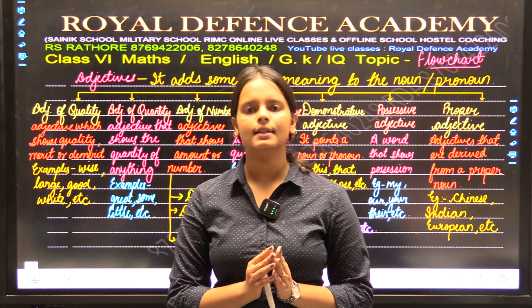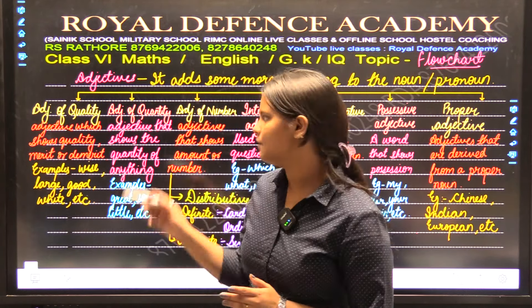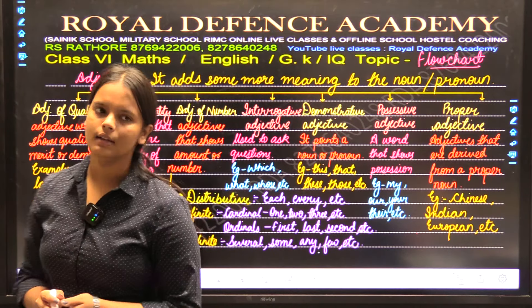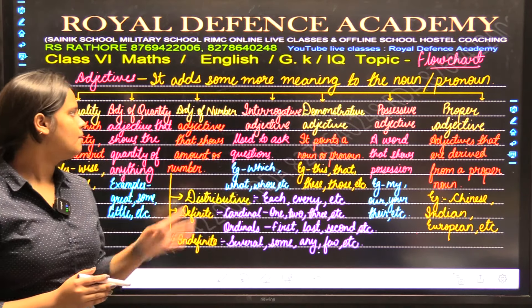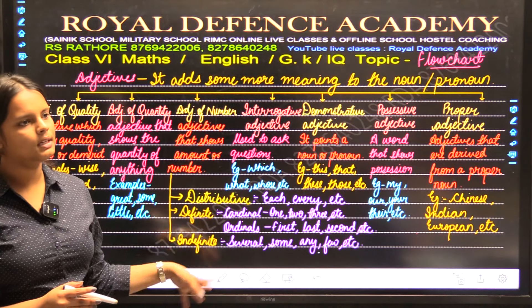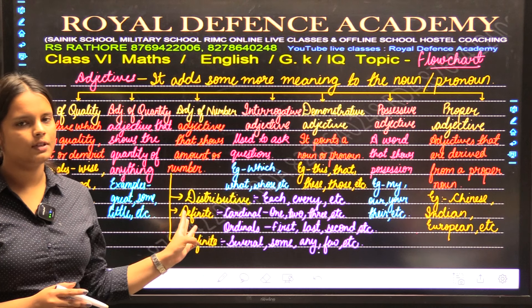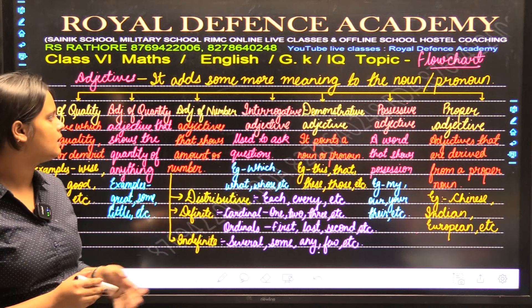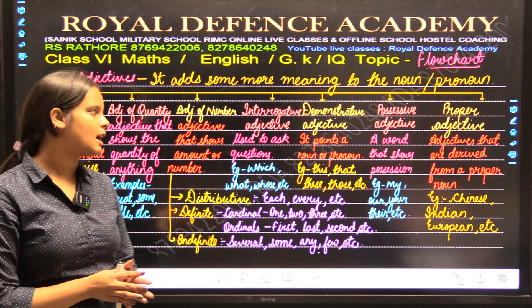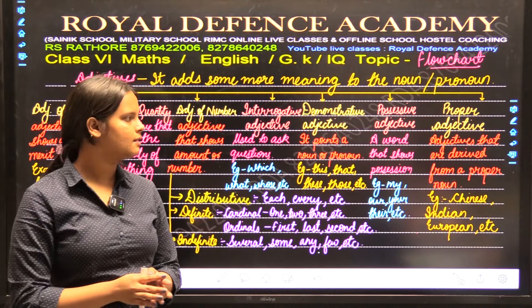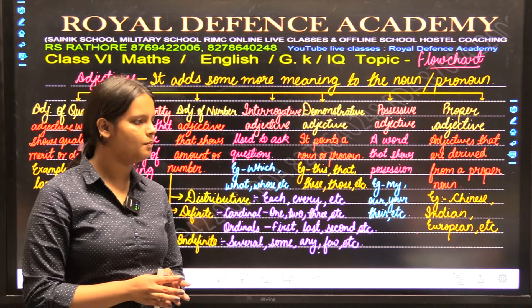In English, we have basically seven types of adjectives: adjective of quality, quantity, and number. Number is again divided into three — distributive, definite and indefinite — as well as interrogative, demonstrative, possessive and proper adjective.